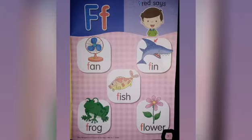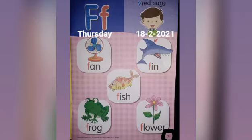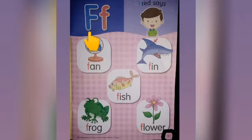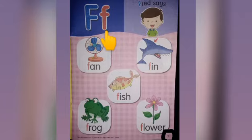Now you have to write today's day and date. Finger point, ready, point. Children, this is capital letter F. And this is small letter F.